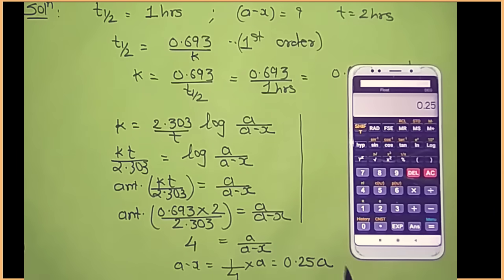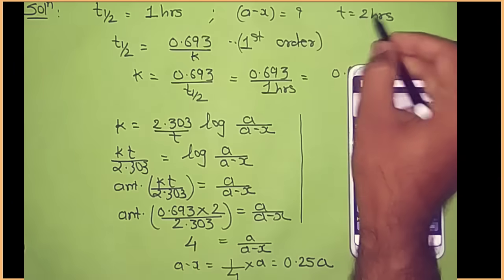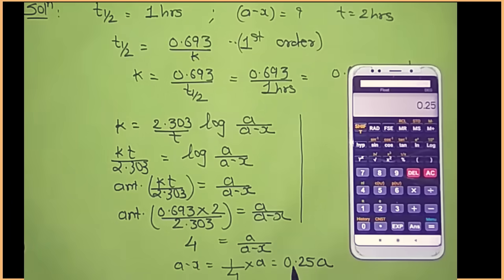So the fraction of reactant remaining after 2 hours is equal to 0.25 of A, that is one-fourth of the initial amount.